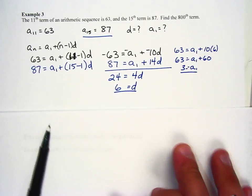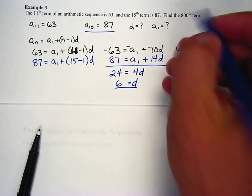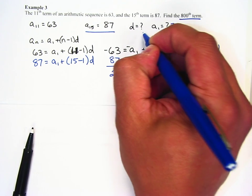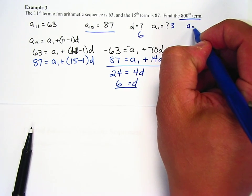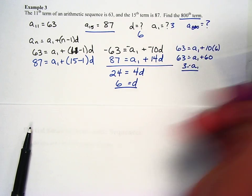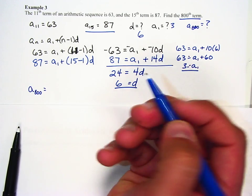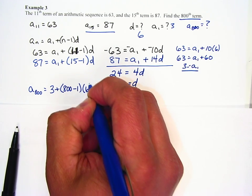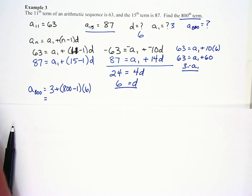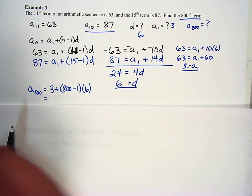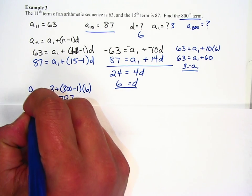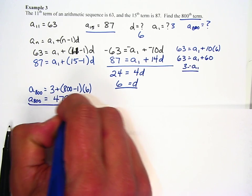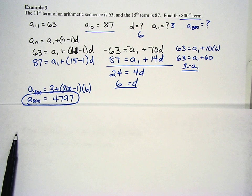So now I know a sub 1. I know d. I have to just find the 800th term. So a sub 1 is 3. d is 6. And I need to find a sub 800. So plug it in. a sub 800 is equal to 3 plus 800 minus 1 times 6. I'm just going to type that all in my calculator. 799 times 6. 4797. And so our 800th term is 4797. This is a very easy way to add up different numbers or figure out different terms in a sequence where we're just adding. And so there's our first couple examples.